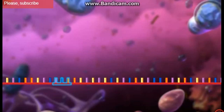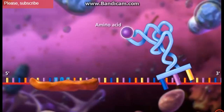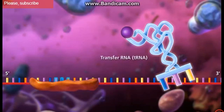Translation begins with the messenger RNA strand binding to the small ribosomal subunit upstream of the start codon. Each amino acid is brought to the ribosome by a specific transfer RNA molecule.